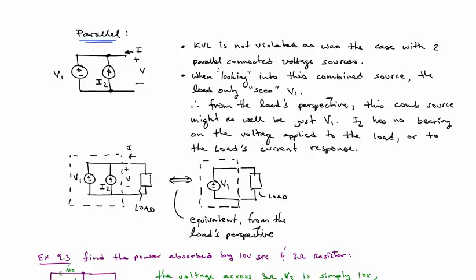And so here again, when we connect that up to a load, all the load sees is a voltage, in this case, V equal to V1. It has no knowledge that there's a current source I2 and it doesn't even care about it because that I2 has no impact.